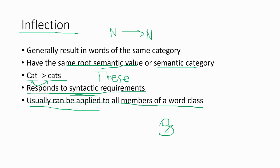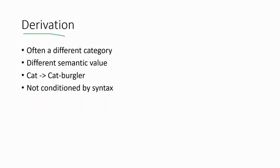Derivation is different. So we often end up in a different category. For example, destroy - this actually comes from Latin so this derivation was originally a Latin derivation - but destroy and then we have destruction. So destroy is a verb, destruction would be a noun. Different semantic value. Sometimes the semantic value of the derived word is completely different.